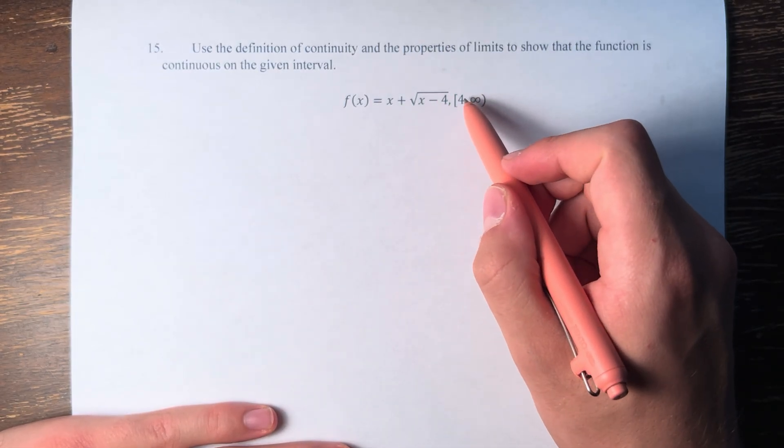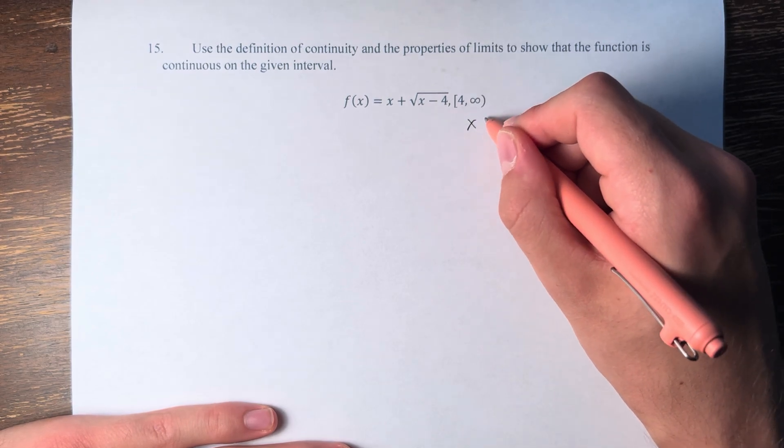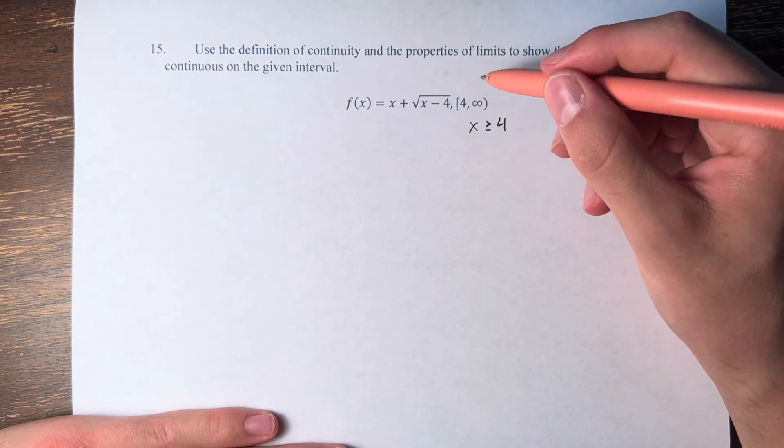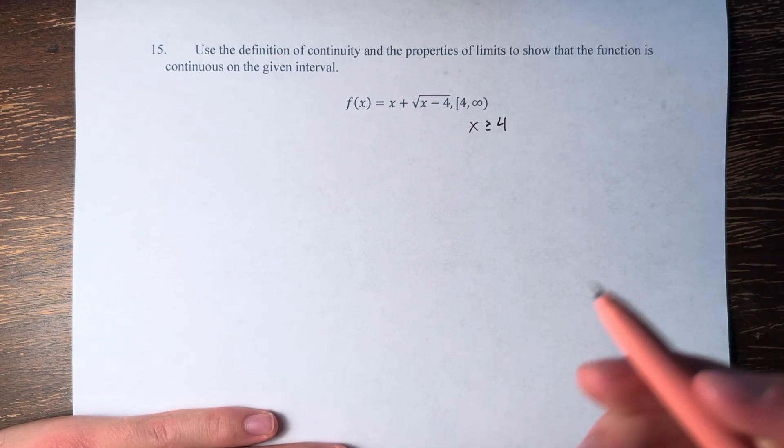So let's rewrite this interval first as x is greater than or equal to 4. Since this is all values greater than 4, and we're also including 4, so it's equal to.